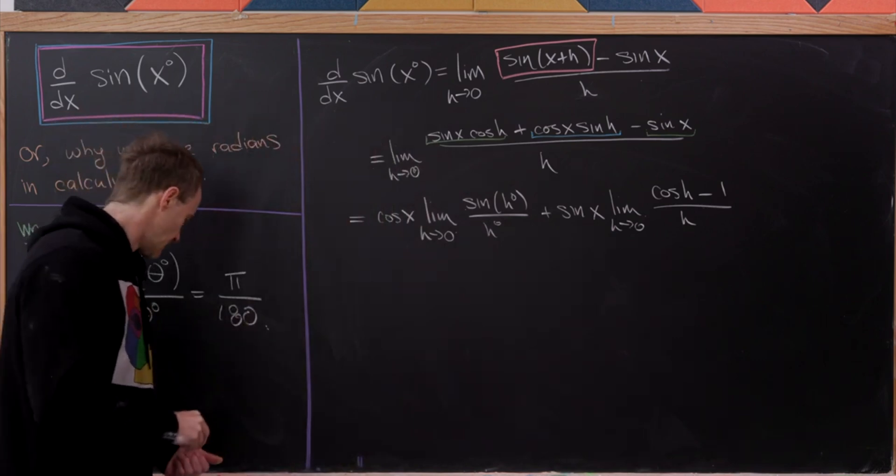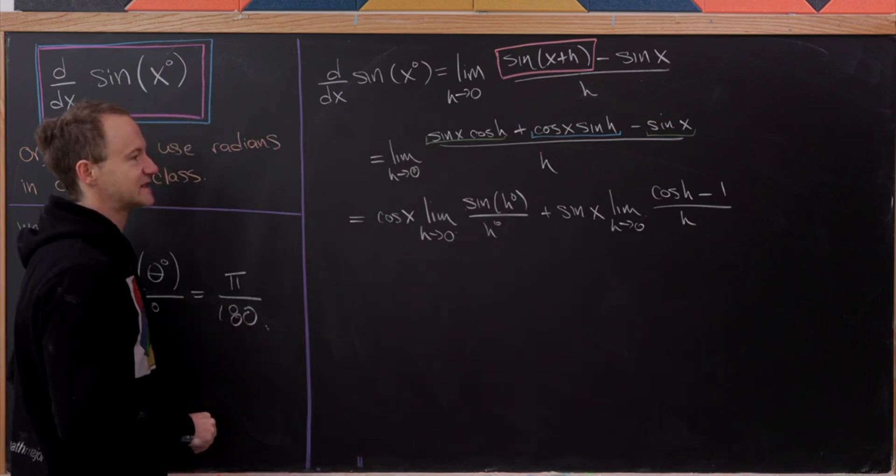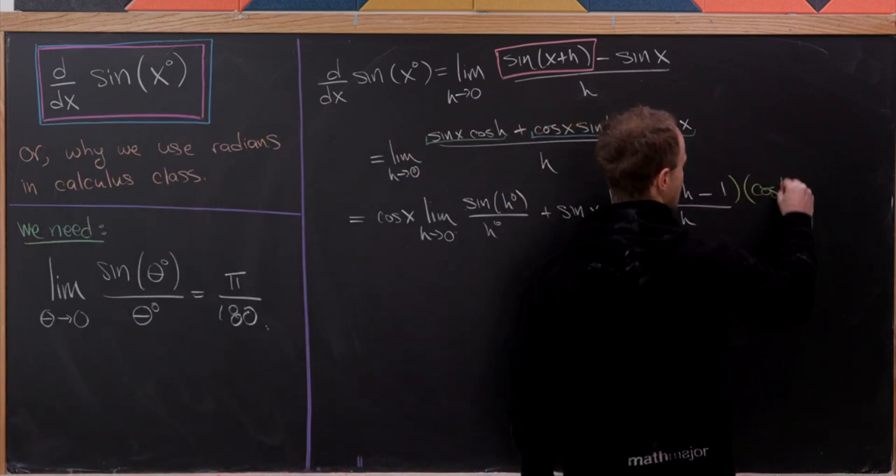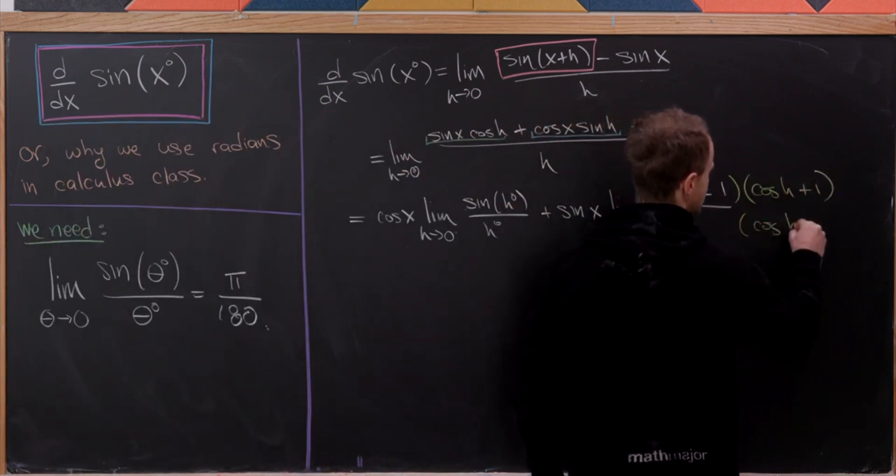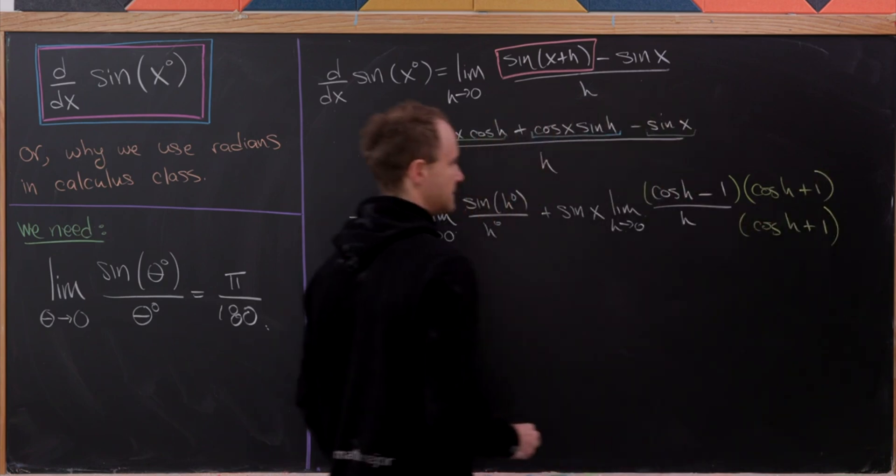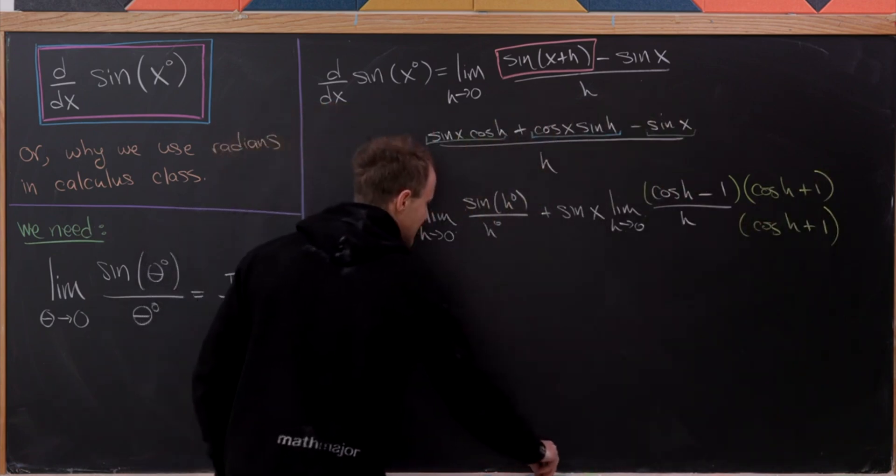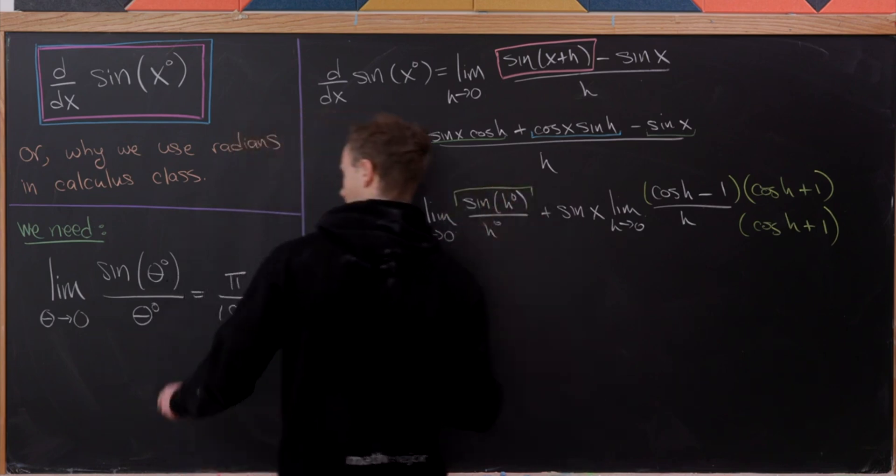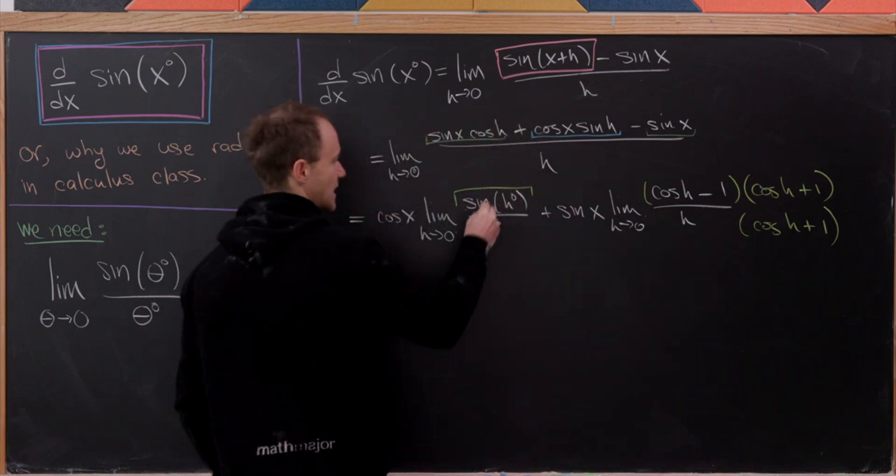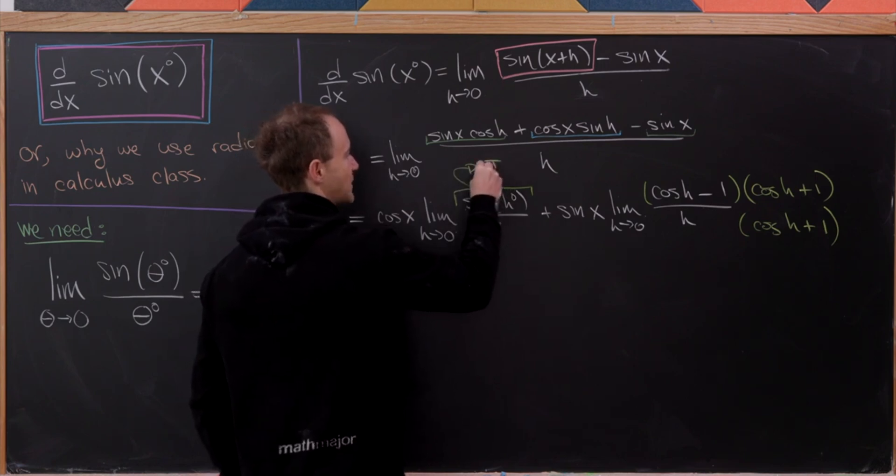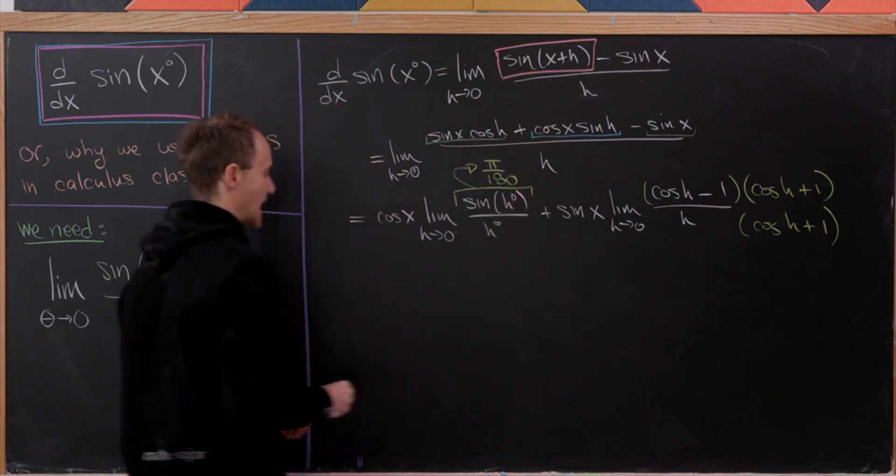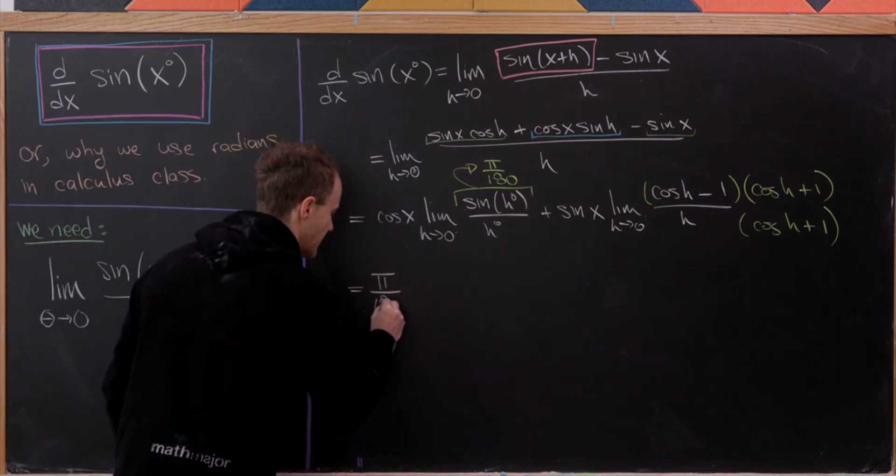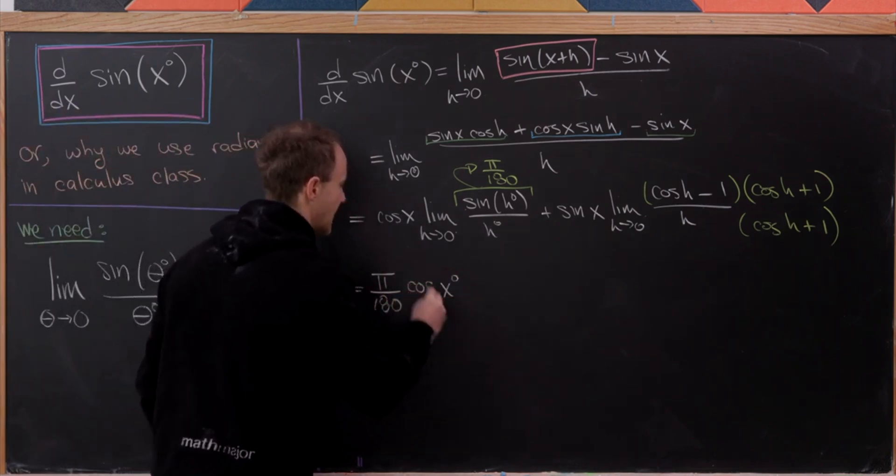Okay great. And now we're going to take this second term and multiply by cosine of h plus 1 over cosine of h plus 1. And sort of while we do that, let's observe that this first term is easily evaluated by our tool over here, which we just derived. And in fact this is pi over 180. So so far we have pi over 180 times cosine of x degrees.